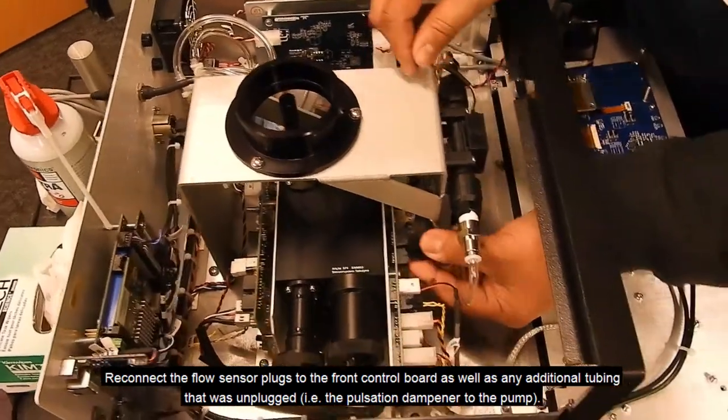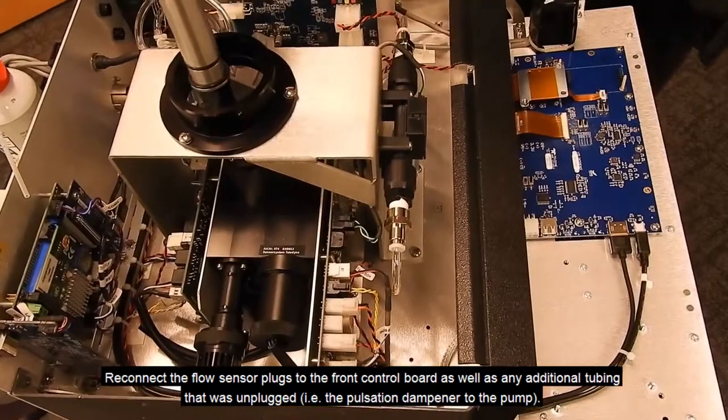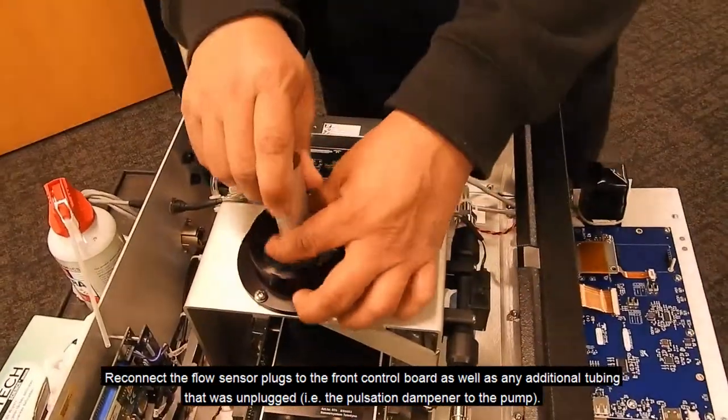Reconnect the flow sensor plugs to the front control board, as well as any additional tubing that was unplugged, such as the pulsation dampener to the pump.